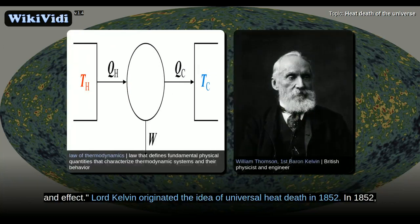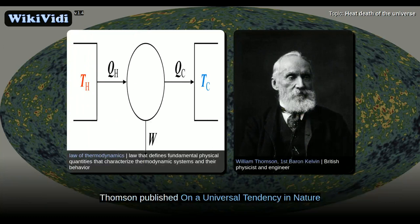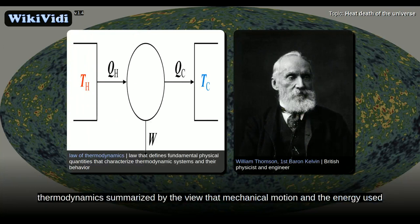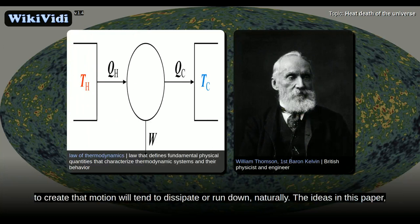Lord Kelvin originated the idea of universal heat death in 1852. In 1852, Thomson published on a universal tendency in nature to the dissipation of mechanical energy in which he outlined the rudiments of the second law of thermodynamics. The ideas in this paper, in relation to their application to the age of the sun, and the dynamics of the universal operation, attracted the likes of William Rankine.